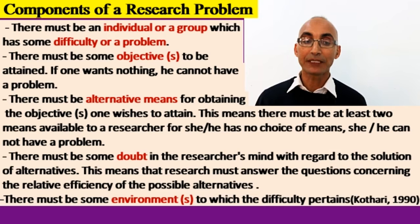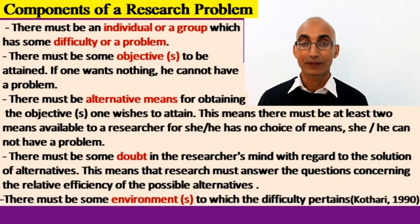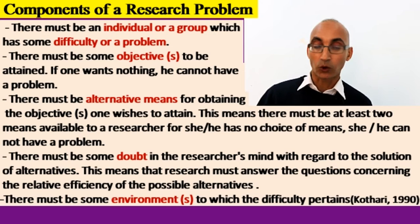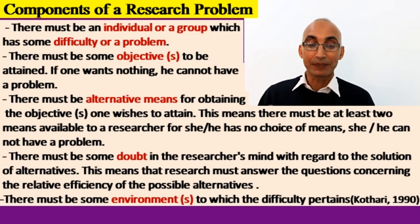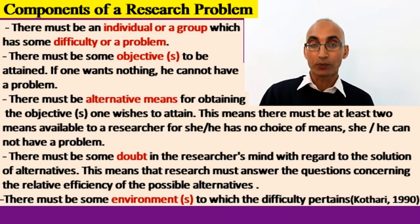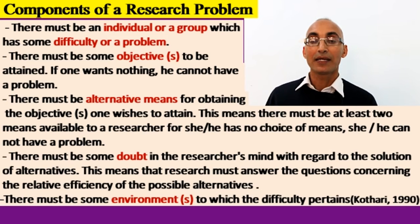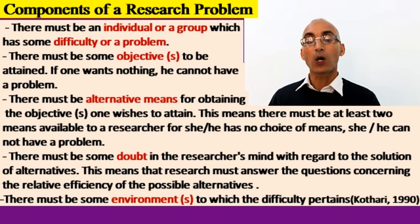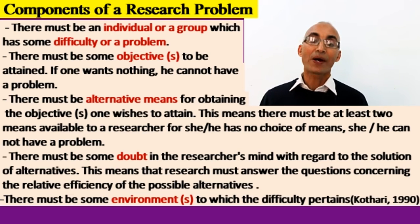The components the researcher should know in order to localize their problem are as follows. First, there must be an individual or group which has some difficulty or problem — there will be no problem without an individual or a group of individuals, whether one person, a community, or a society, who faces such a difficulty, obstacle, complication, or similar challenge.